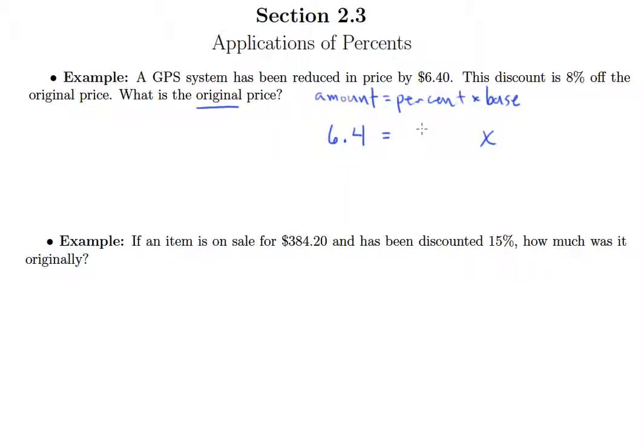Remember, whenever we're looking for the base we need to decide whether the amount that we're given and the percent we're given represent the same thing. And if not, then we make some adjustments to the percentage. So what is $6.40? Well, it's been reduced in price by $6.40, so that is literally the amount of the discount.